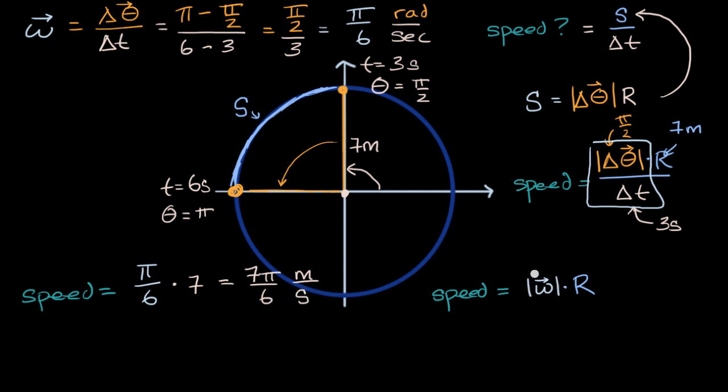And the reason why we're doing the absolute values, because remember, speed is a scalar quantity. We're not specifying the direction. In fact, the whole time we're traveling, our direction is constantly changing. So there you have it.